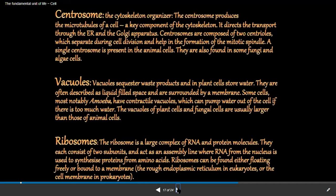A single centrosome is present in animal cells. They are also found in some fungi and algae. Centrosomes are not bounded by any membrane but consist of two granules called centrioles. The main role of the centrosome is that it helps in cell division.